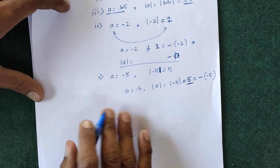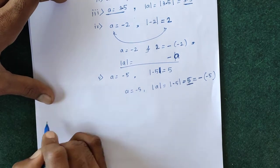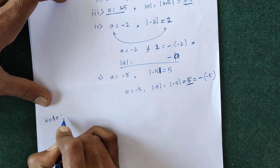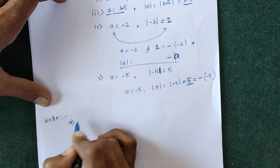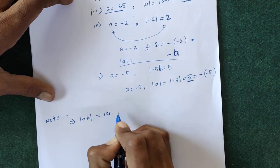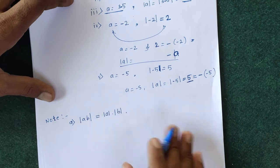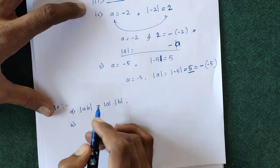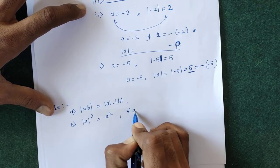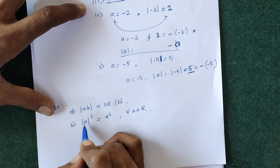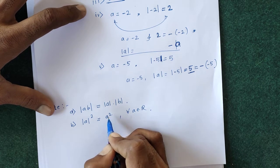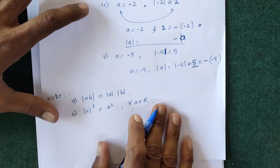Now some properties of absolute value. The first property is: mod(a·b) equals mod a times mod b. The second property is: mod of a² equals a² itself, for all a belonging to the real numbers, since the square of any real number is always positive.